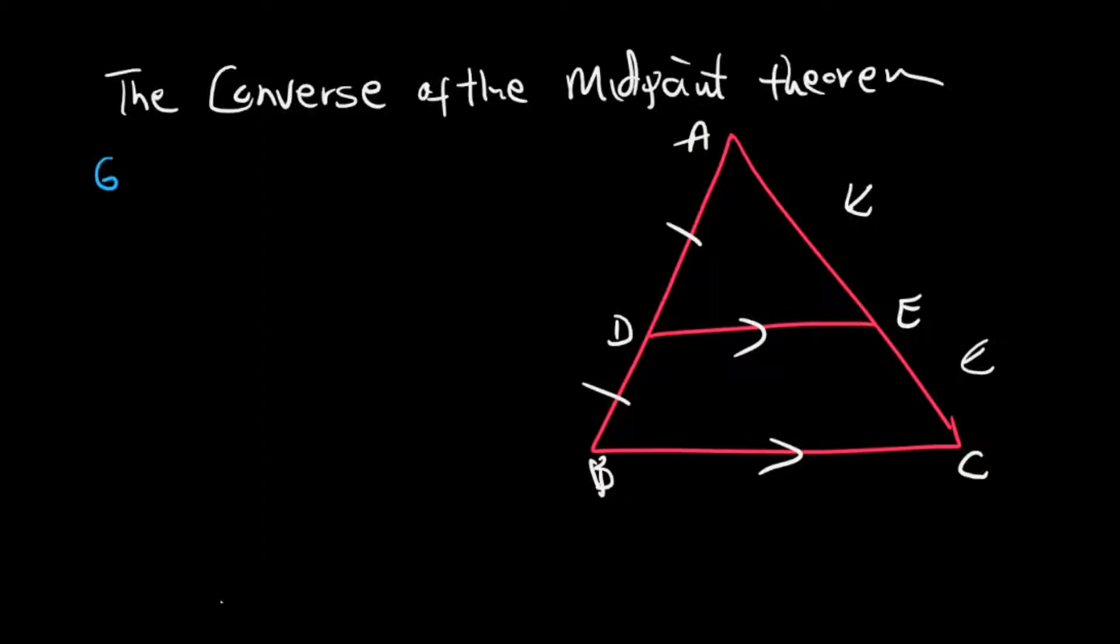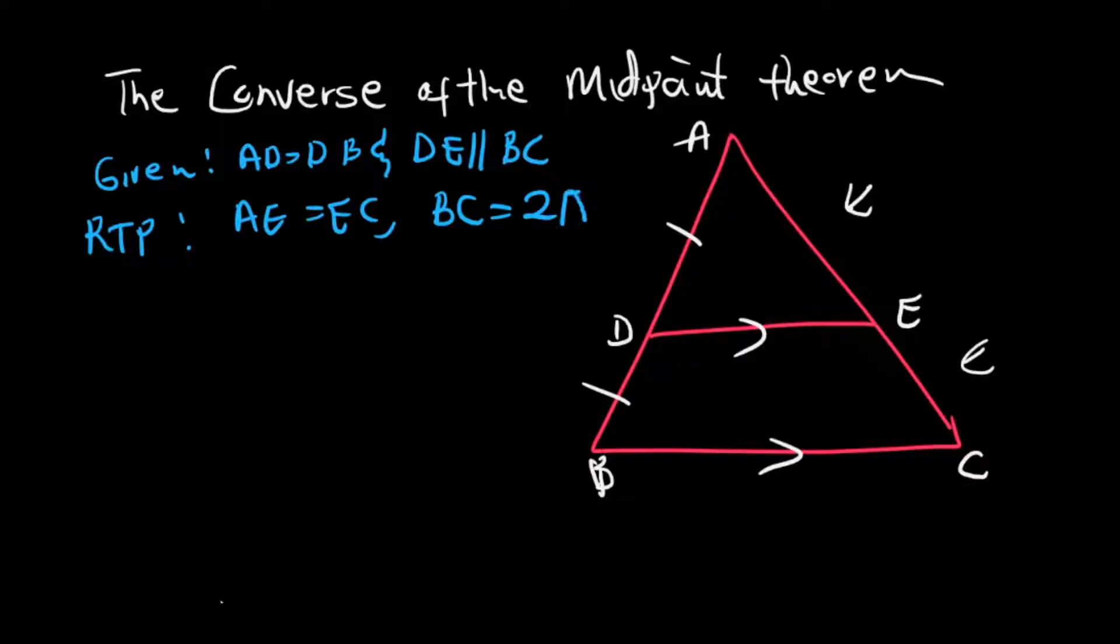Let me write what you're given. You're given that AD equals DB and DE is parallel to BC. What you are required to prove is that AE equals EC, and we're also required to prove that BC is twice DE.